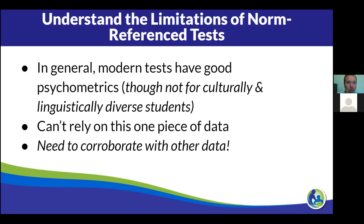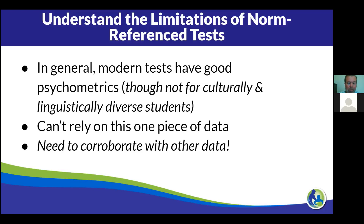Understanding the limitations of norm reference tests: our modern tests generally have good reported psychometrics — good reliability, validity, and decent sensitivity and specificity — but are typically much worse for students from culturally and linguistically diverse backgrounds. The key thing to recognize is that we cannot rely on this one piece of data alone. It can be informative, but not as accurate as we often think, and we need to corroborate with other data.